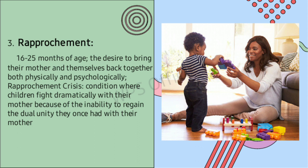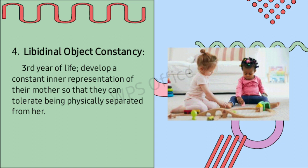The fourth sub-stage is libidinal object constancy, during the third year of life. Children develop a constant inner representation of their mother so that they can tolerate being physically separated from her. If this libidinal object constancy is not created, children will continue to rely on their mother's physical presence for security. Children must establish their uniqueness and achieve a degree of object constancy — learning to function without their mother and creating other object associations. In summary, separation-individuation is a period during which children mentally detach from their mothers and achieve individuation — a feeling of self-identity.